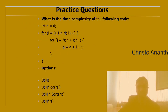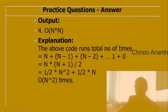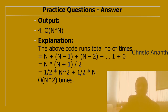Practice question 2: int a=0; for(i=0; i<n; i++) for(j=n; j>i; j--) a+=i+j; — what is the time complexity? The answer is O(n²). This is a recursive relation: n + (n-1) + (n-2) + ... + 1 + 0, which equals n(n+1)/2, simplifying to O(n²).